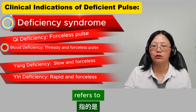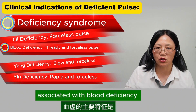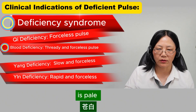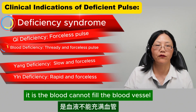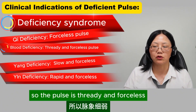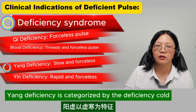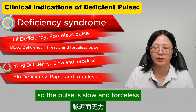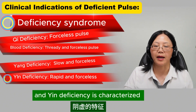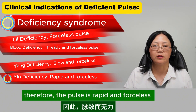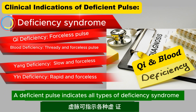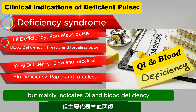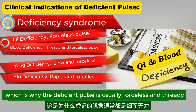Blood compared to qi refers to blood volume. The major character associated with blood deficiency is pale. With blood deficiency, the blood cannot fill the blood vessel, so the pulse is thready and forceless. Yang deficiency is characterized by deficiency cold, so the pulse is slow and forceless. Yin deficiency is characterized by deficiency heat, so the pulse is rapid and forceless. A deficient pulse mainly indicates qi and blood deficiency, which is why it is usually forceless and thready.